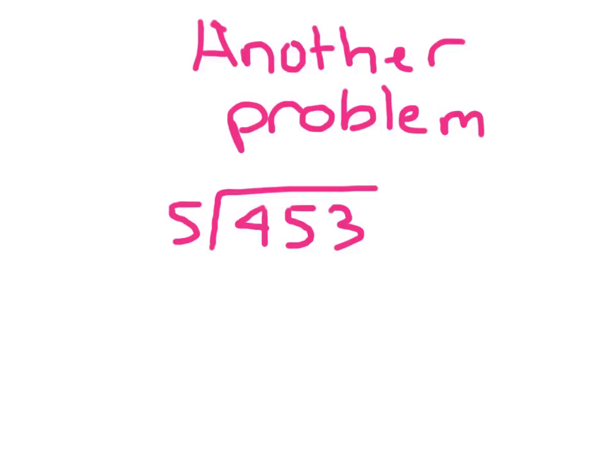Here's another problem for you to solve. Go ahead and solve it. And this time, you don't have to do your check work. You can if you want, but you don't have to. So, 5 cannot go into 4. 5 can go into 45, 9 whole times, because 9 times 5 is 45, and 45 minus 45 is 0.